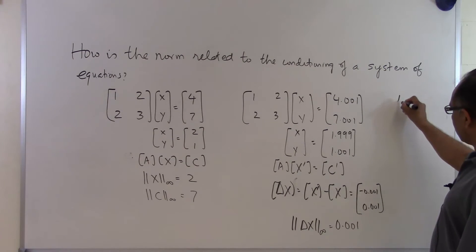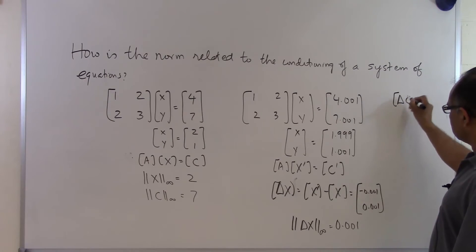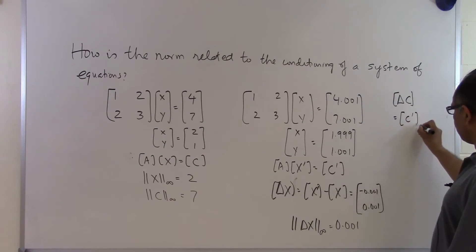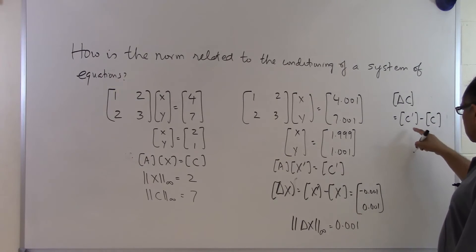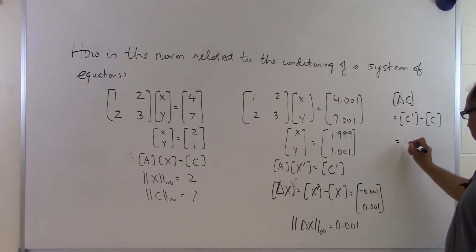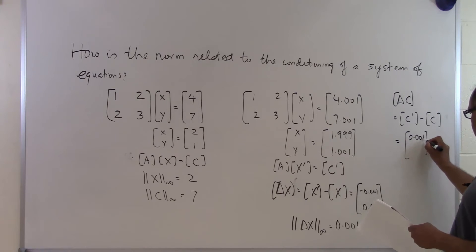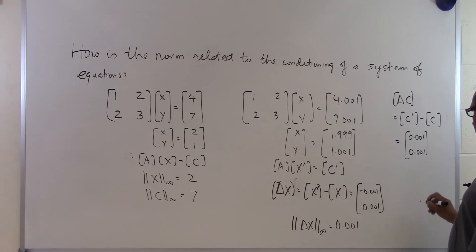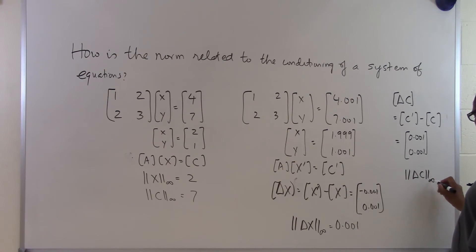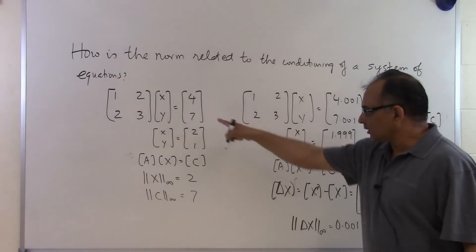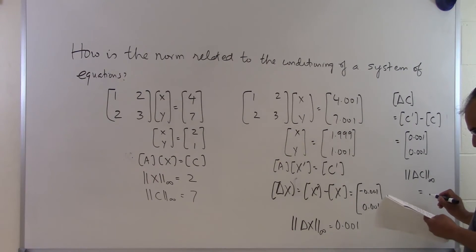Similarly, we find delta C equal to C prime minus C — the new right-hand side minus the previous right-hand side. In this case delta C equals [0.0001, 0.001]. The norm of delta C, which is the difference between the two right-hand sides, turns out to be equal to 0.001.